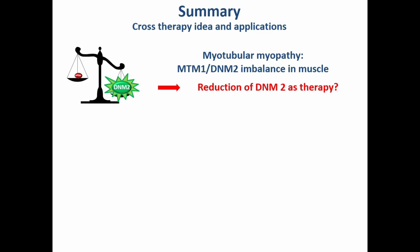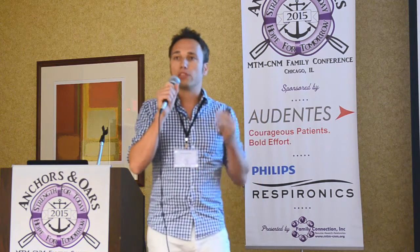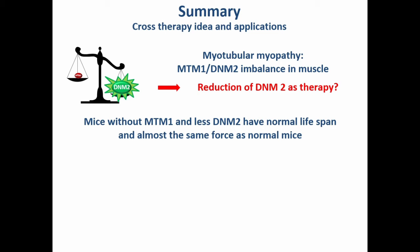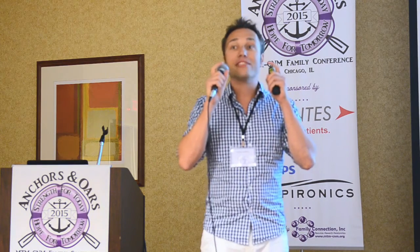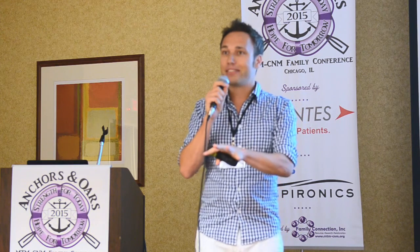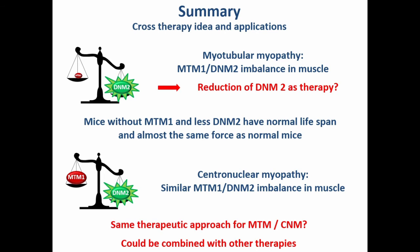To sum up: we found an imbalance in myotubular myopathy between MTM1 and Dynamin-2, and instead of targeting MTM1 we targeted Dynamin-2 to reduce it. The result is that myotubular myopathy mice with Dynamin-2 reduced by half have a normal lifespan and are almost as strong as normal mice. We also found a very similar imbalance in centronuclear myopathy, so this cross therapy could target both conditions and be combined with any other therapy on the market or coming to market.